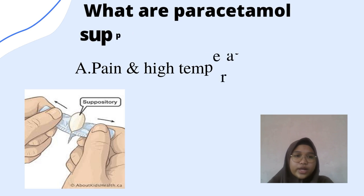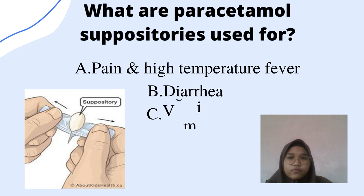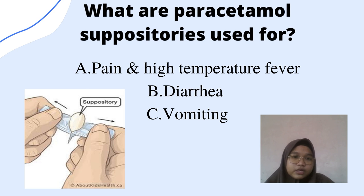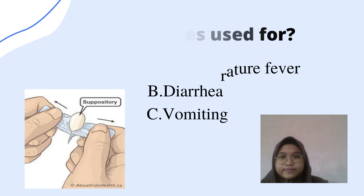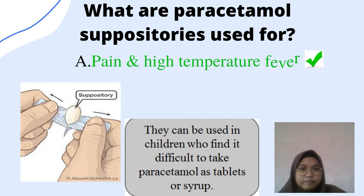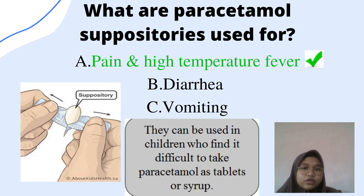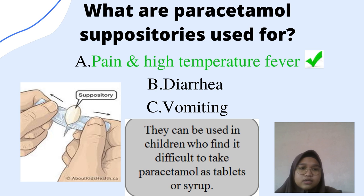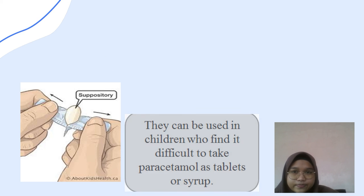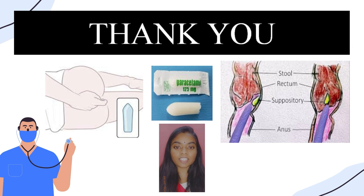The next question is: what are Paracetamol suppositories used for? A — pain and high temperature fever; B — hair; C — vomiting. The answer is A — pain and high temperature fever. They can be used in children who find it difficult to take Paracetamol as a tablet or syrup. Thank you for listening patiently to our presentation. We hope all this information helps you learn about Paracetamol suppositories.